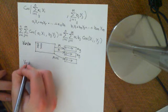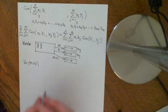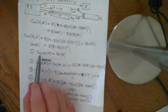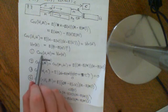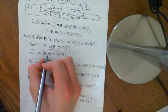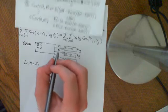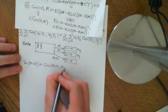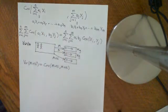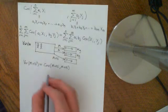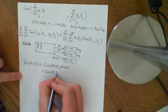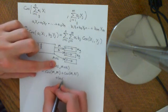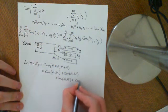If we want to take the variance of m plus n, we can apply property 1 — that the covariance of h with itself equals the variance of h — but it works the other way: it's actually very useful to write the variance of m plus n as the covariance of m plus n with m plus n. We can then use the distributive property to split this into: covariance of m with m, plus covariance of m with n, plus covariance of n with m, plus covariance of n with n.